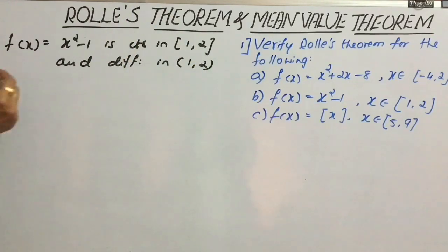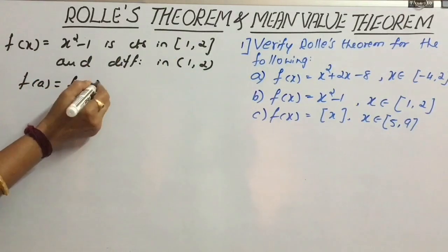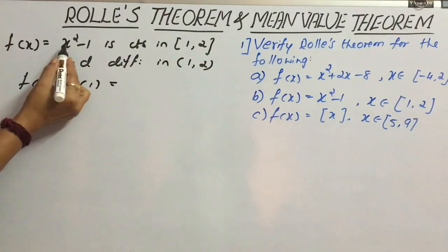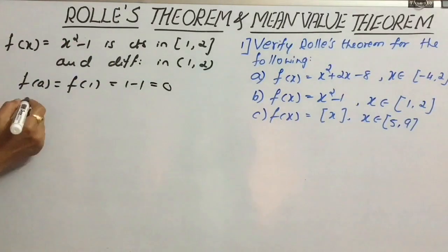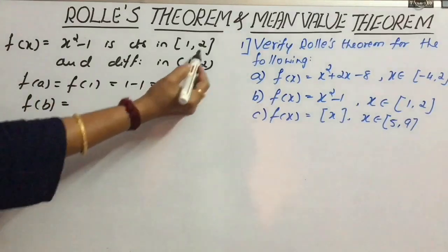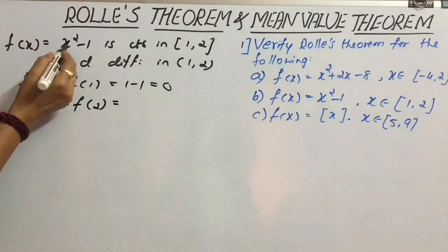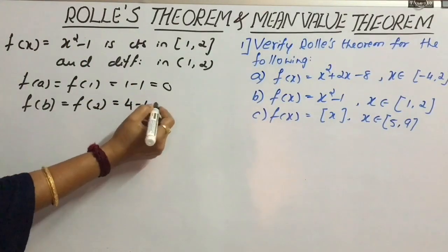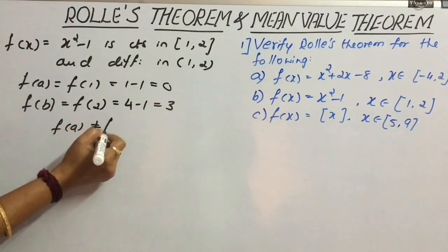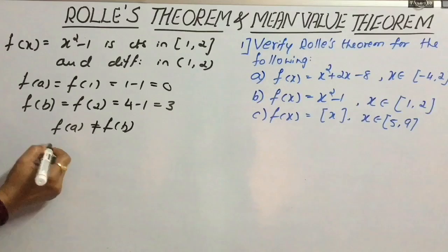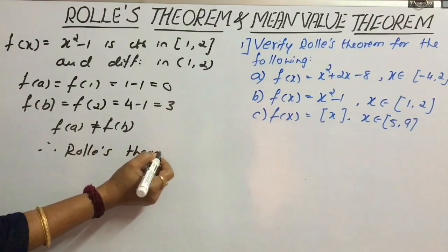Now move on to the second question. Consider f(a), where a = 1. So f(1): if we replace 1 in the given function, we get 1² = 1 − 1 = 0. Now get f(b), where b = 2. So f(2) = 2² − 1 = 4 − 1 = 3. Therefore f(a) is not equal to f(b), and Rolle's theorem does not hold good.